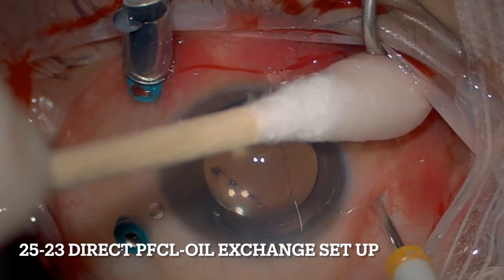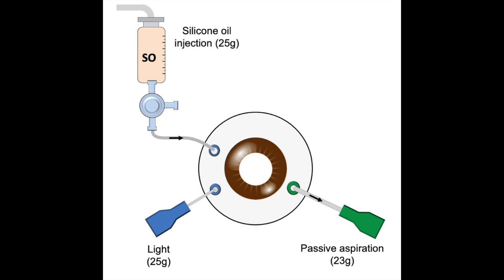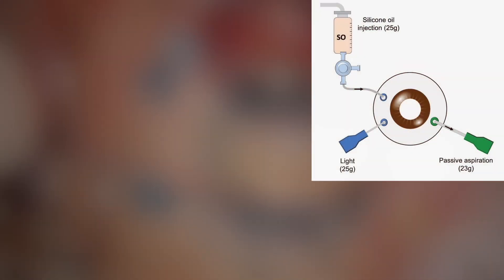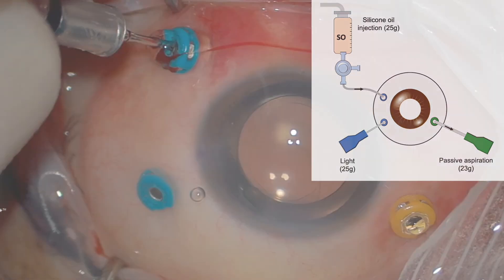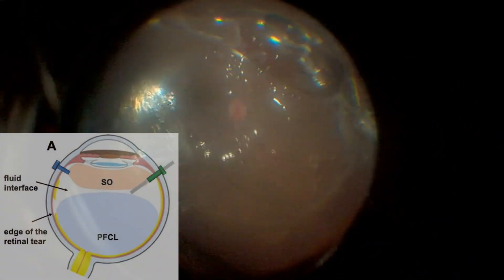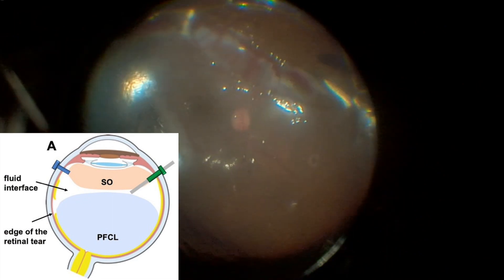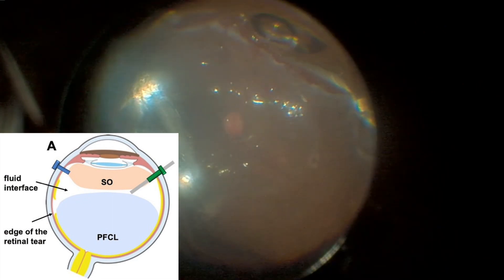Now the 23-25 direct PFCL exchange. We exchanged one port of the aspiration to 23 and that gives an advantage of about 1.5 times increased flow for the PFCL removal to avoid that problem. And if you look here, the color of the nerve remains good during the procedure.